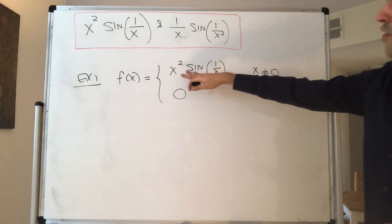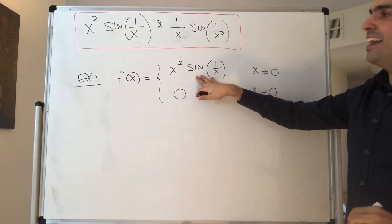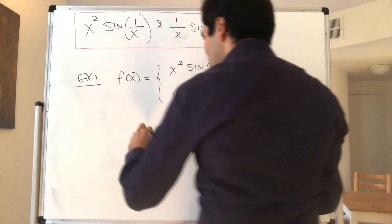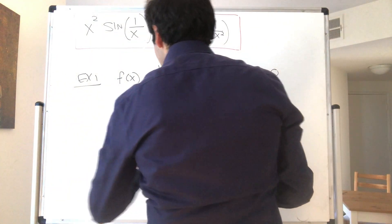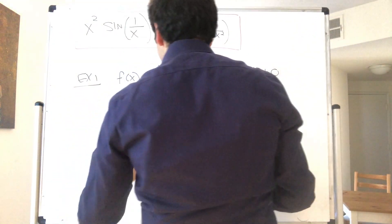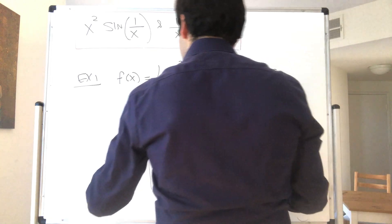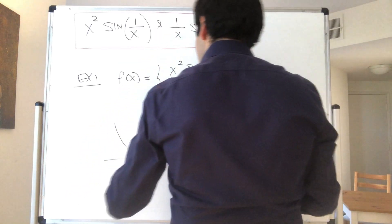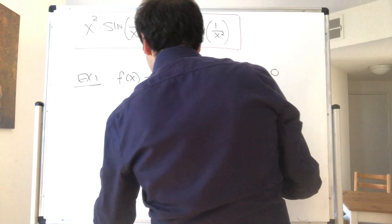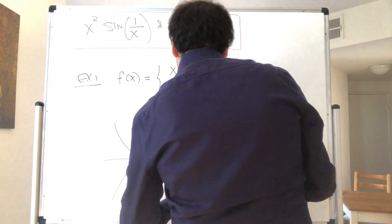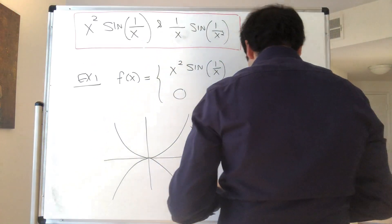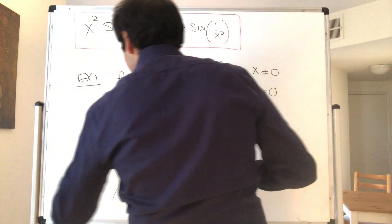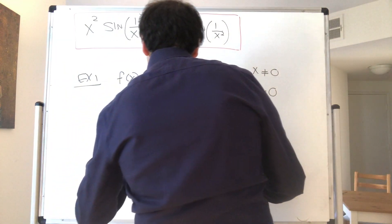So what this function looks like: sine is between minus 1 and 1, so this function is actually squeezed between two parabolas. This is the parabola x squared, and this is the parabola minus x squared, and basically this function is squeezed between the two — it looks like that.